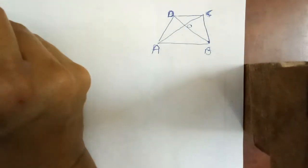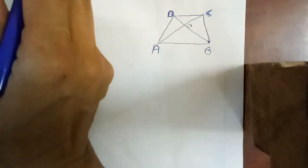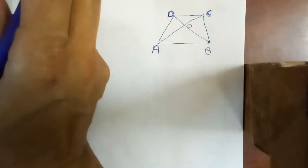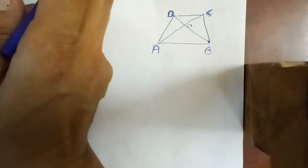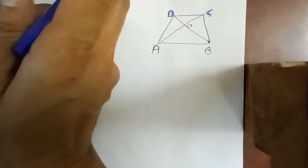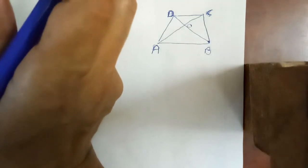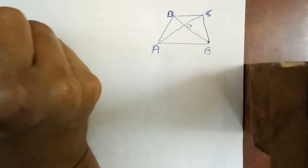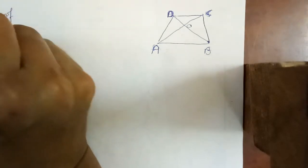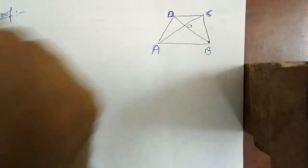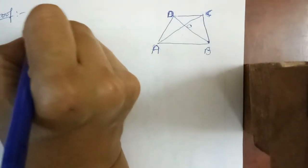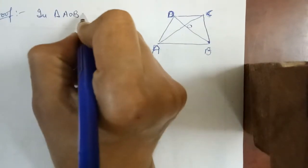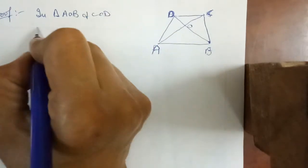We will use the fact that AB is double of CD to set up the ratio. To prove the ratio of area of triangle AOB to area of triangle COD, I will start the proof. In triangle AOB and triangle COD: